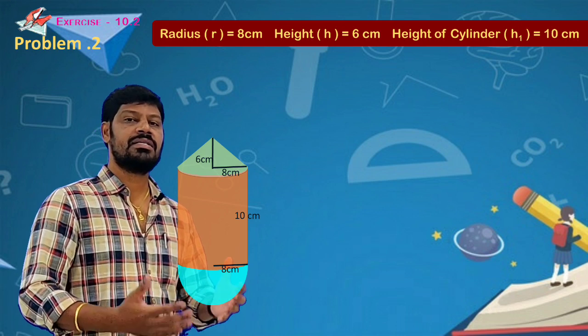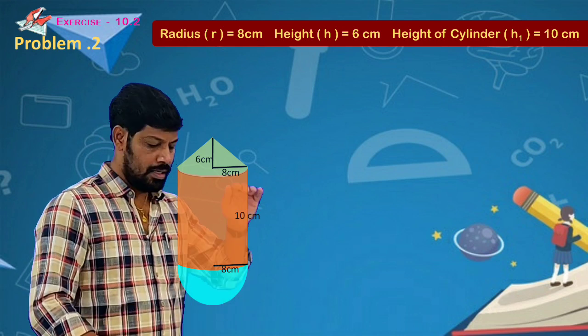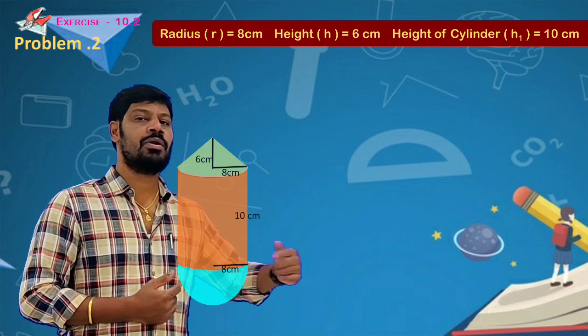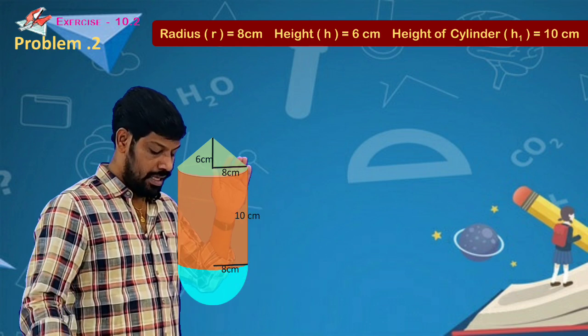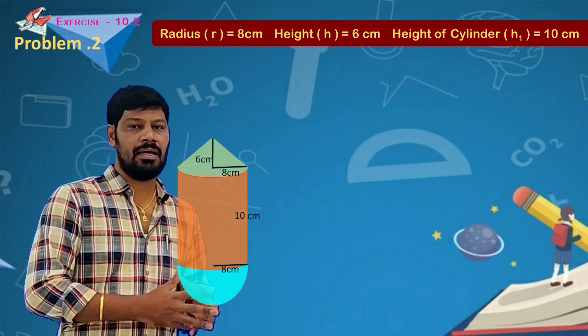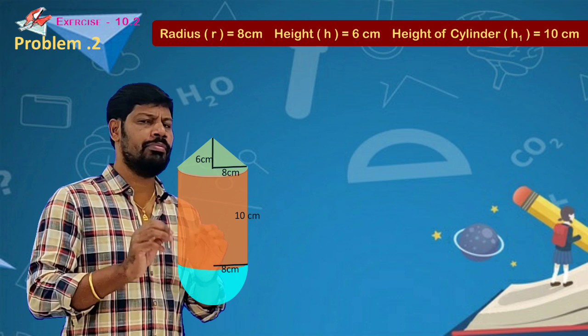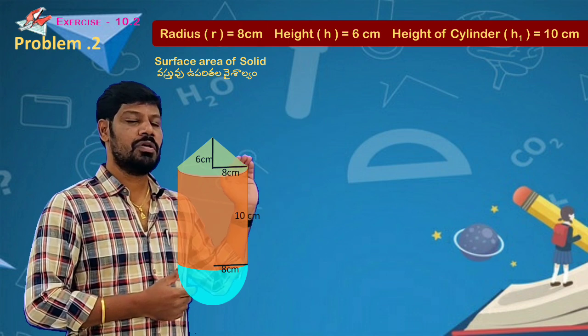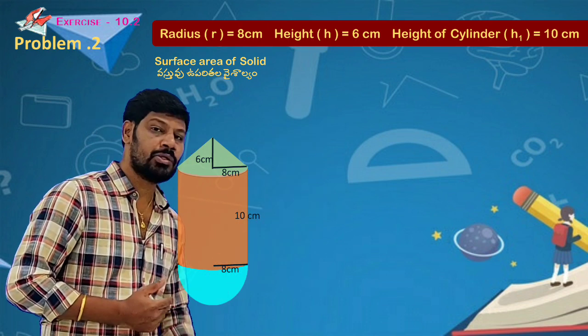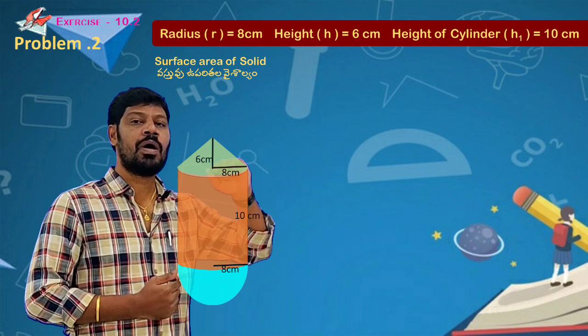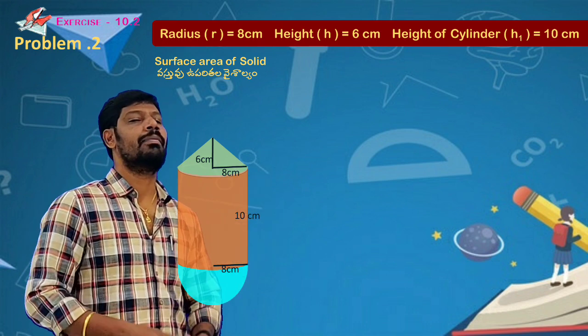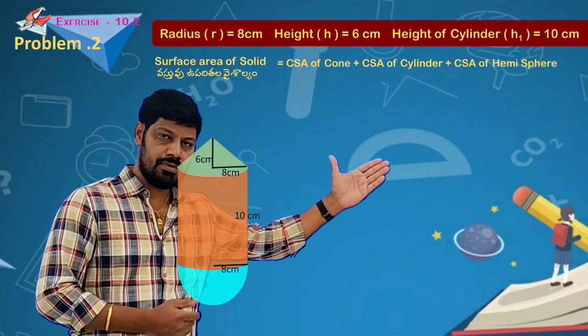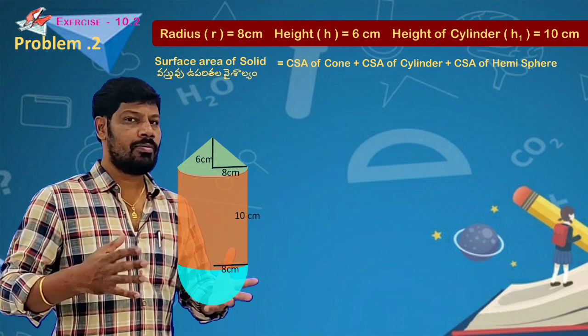What is the surface area of this solid? This equals CSA of cone plus CSA of cylinder plus CSA of hemisphere.